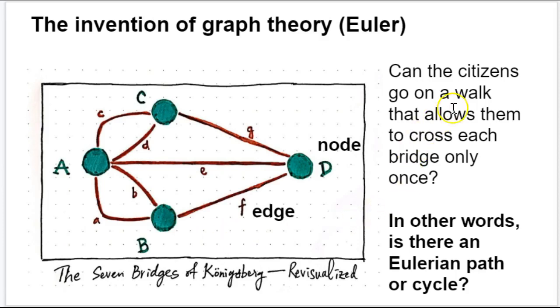So when we ask this question, we're actually asking, is there an Eulerian path or cycle? The difference between a path and a cycle, much like in biochemistry, is that a path begins with one thing and ends with another. It's linear, and a cycle begins and ends at the same thing.